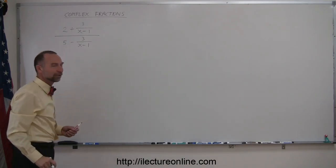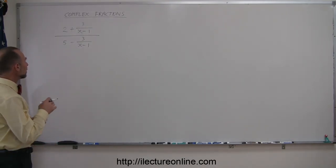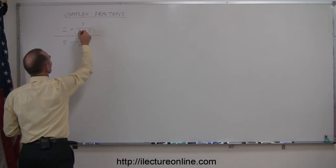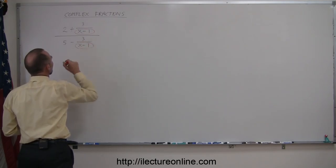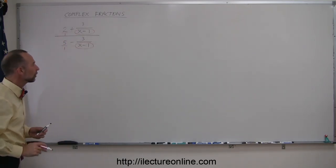In the denominator we have another fraction. I like to identify each denominator in each fraction in the numerator and the denominator, which means we have an x minus one here and an x minus one there. Here we can actually say this is over one and this is over one, so we can ignore those denominators.